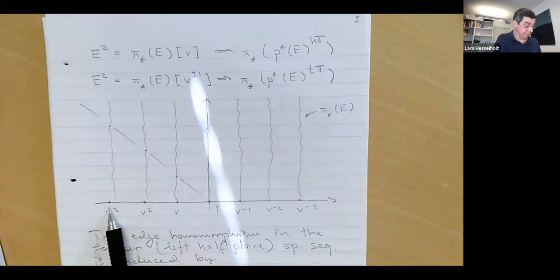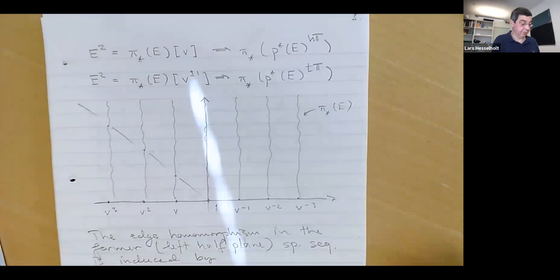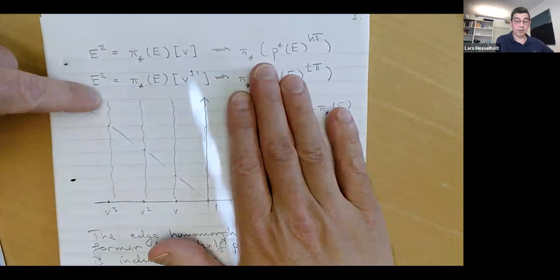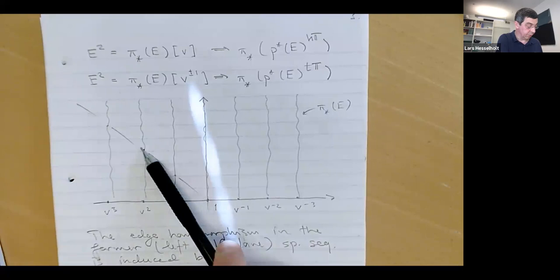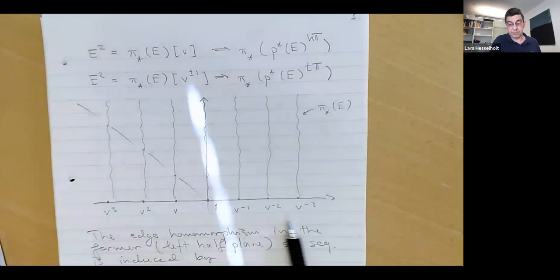Here on the baseline, we have the cohomology of the classifying space of the circle, which is CP-infinity. For the homotopy fixed point spectral sequence, we only have this side. Each of these vertical lines is then a copy of the homotopy groups of the spectrum E, and what sits in degree zero is along this diagonal line. The Tate is made by inverting this element V so that it becomes periodic.